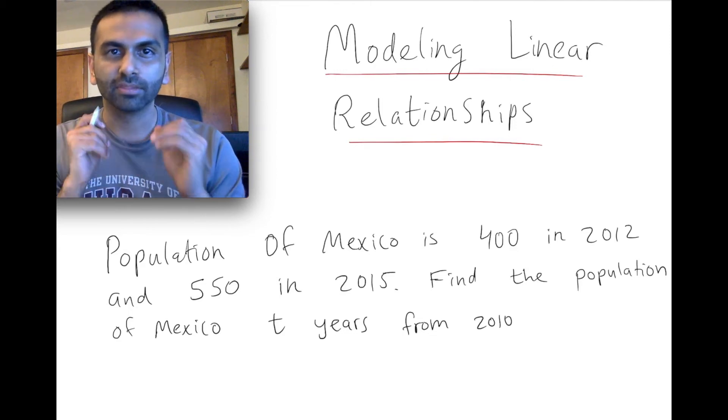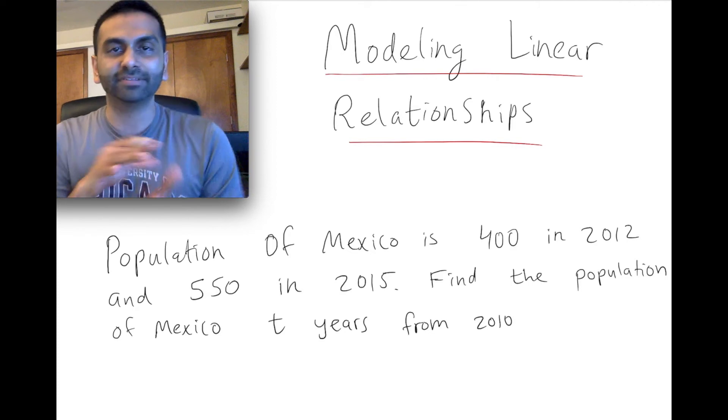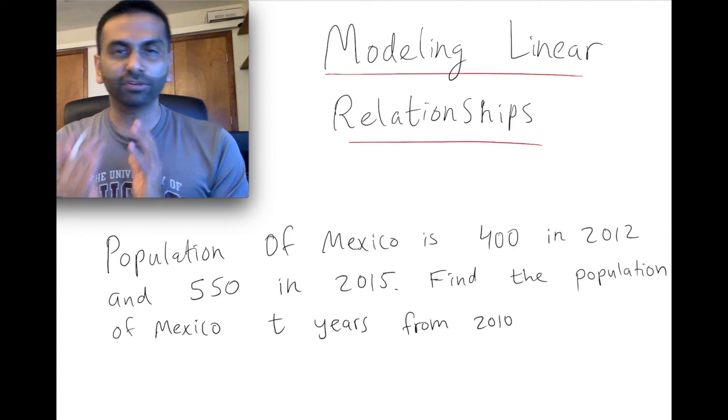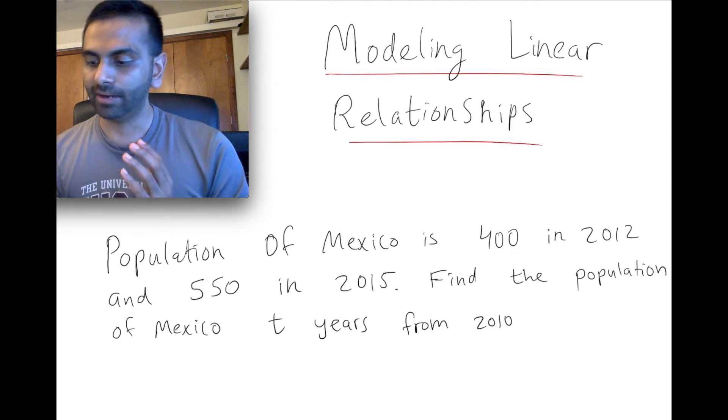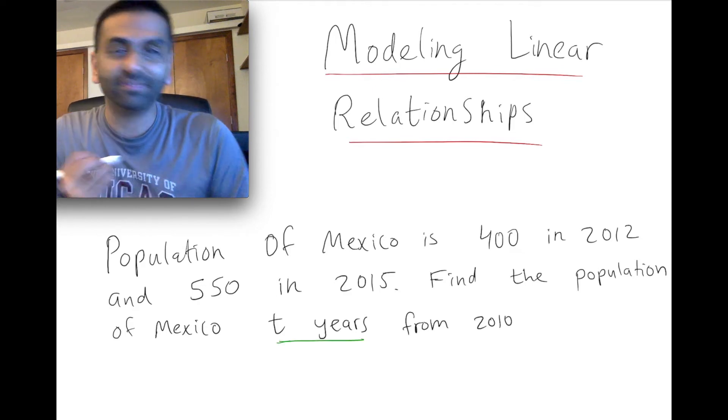So first of all, the main thing to do here is to turn this into math. So first of all, what's the Y equals MX plus B that we're trying to find? Now, T, being the number of years, is kind of giving us a little bit of a clue.